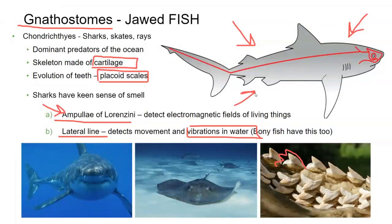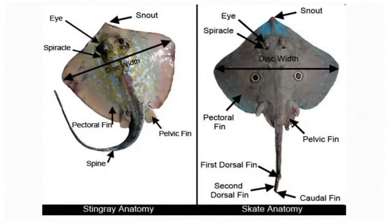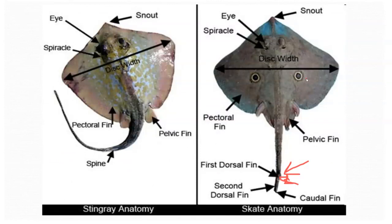We also have stingrays and skates — they look very similar. The main difference is the location of the dorsal fin. The skates and rays look and behave very similarly.